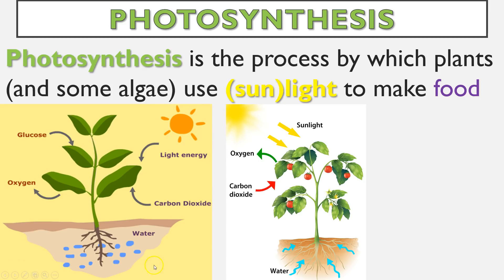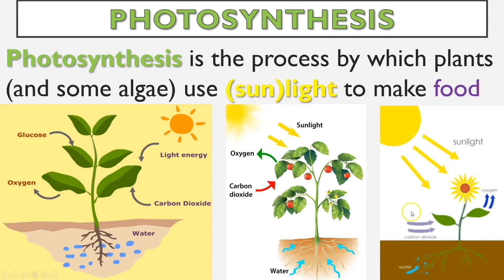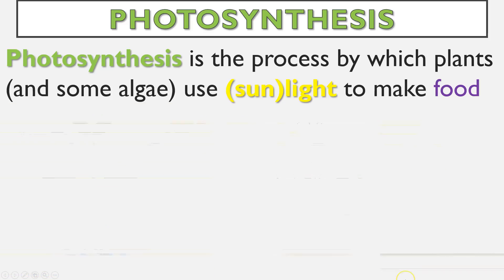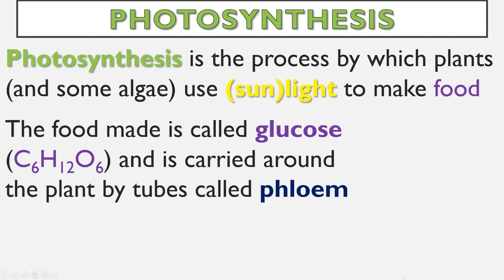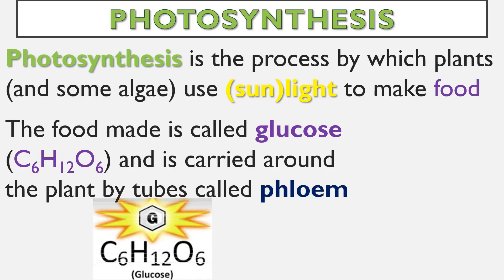Here we see light, carbon dioxide, and water entering, and oxygen and glucose being produced. Here we can see another version of the same thing: light, CO2, and water — those are my ingredients. The food that is made is called glucose, with the formula C6H12O6, and it is carried around the plant by little tubes called phloem. There's also xylem, which carries water, but glucose and the other nutrients are carried around by phloem.